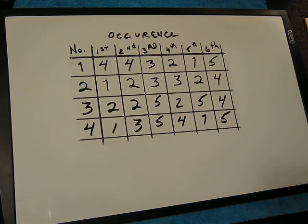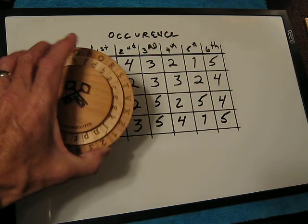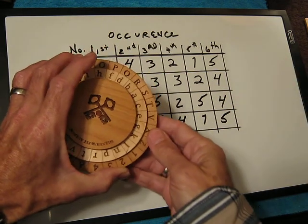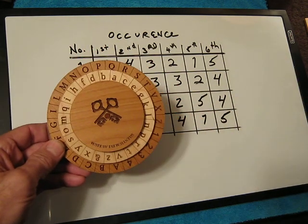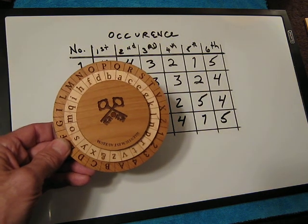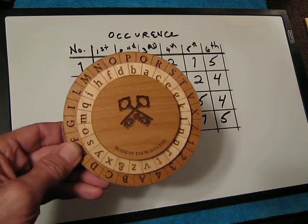Alrighty, well, thanks for watching, and I hope you're having fun with your Alberti cipher. They are available from Creative Craft House. And there is a link also in the description below, so you can order one if you're interested. Thanks for watching, and bye for now.